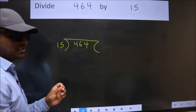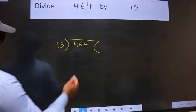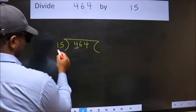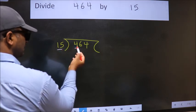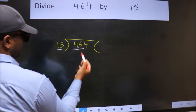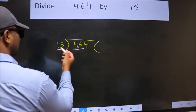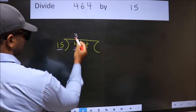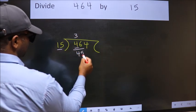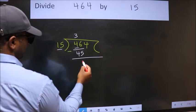This is your step 1. Next, here we have 4, here 15. 4 is smaller than 15, so we should take two numbers, 46. A number close to 46 in the 15 table is 15 threes, 45. Now we should subtract. We get 1.